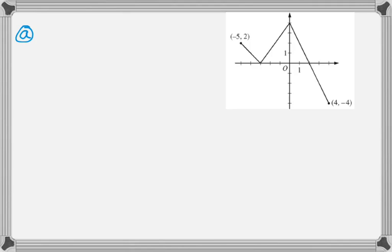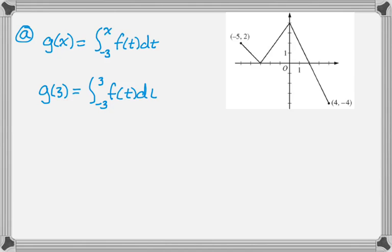So the first thing we've got to do is find g of 3, where g of x is defined to be the integral from negative 3 to x of f of t dt. So this is going to be a geometry problem, really. And so g of 3 is the integral from negative 3 to 3 of f of t dt.